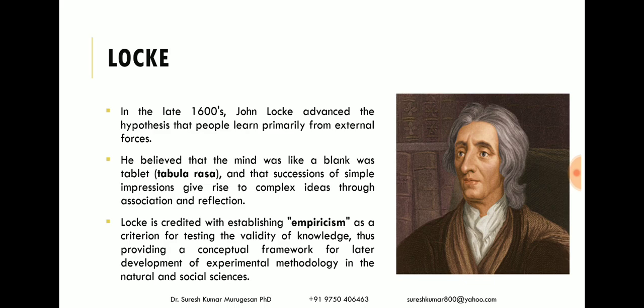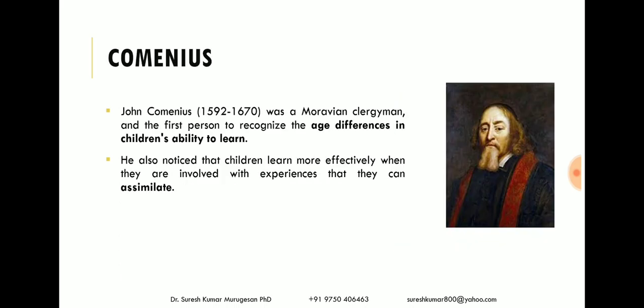John Comenius is another important person who contributed to the development of education psychology. He was a Moravian clergyman and was the first person to recognize age differences in children's ability to learn — a person who is older learns better than a younger person. He also noticed that children learn more effectively when they are involved with experiences they can assimilate, meaning understand the concept.